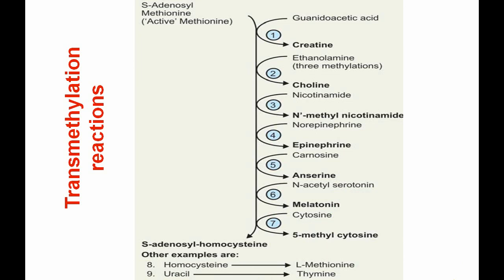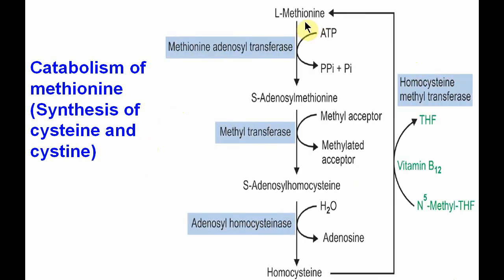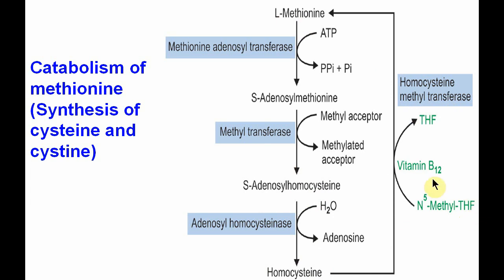Stage two is the catabolism of methionine and synthesis of cysteine and cystine. Methionine is activated to form S-adenosyl methionine, which transfers the methyl group to an acceptor to form S-adenosyl homocysteine via methyltransferase. S-adenosyl homocysteine undergoes hydrolysis to form homocysteine. This homocysteine can be converted back to methionine with the help of homocysteine methyltransferase, where the methyl group is donated by N5-methyltetrahydrofolate.